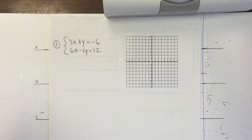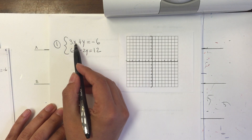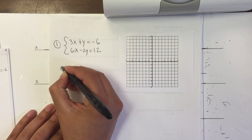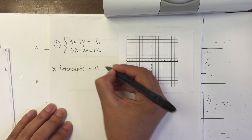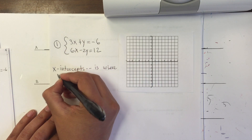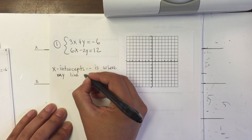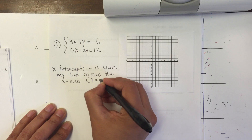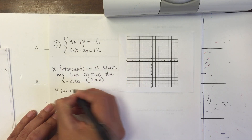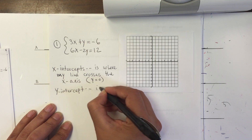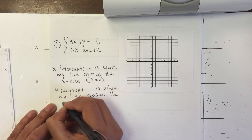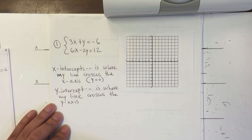How do I find the intercepts, or what are the intercepts basically? The x-intercept is where my line crosses the x-axis, and in that case y will be 0. My y-intercept is where my line crosses the y-axis, and in that case my x is equal to 0. So basically, the opposite is equal to 0.